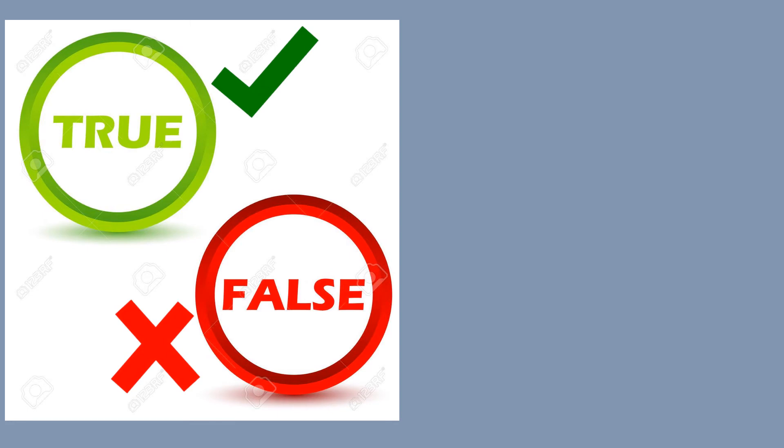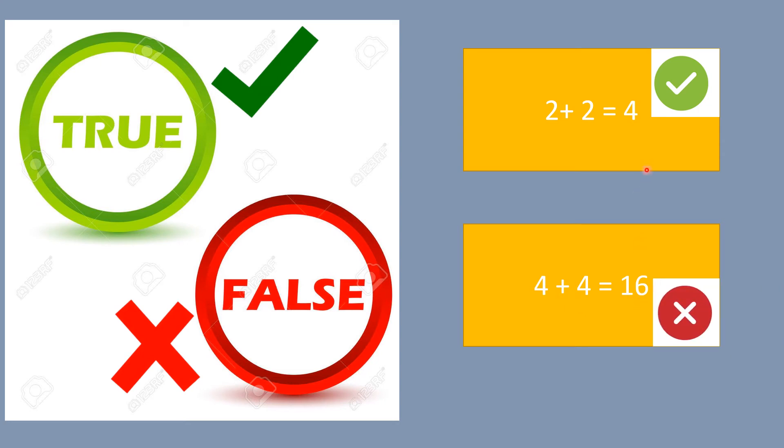True and false. Children, you know true and false very well. True means correct and false means wrong. Now look at this sum. 2 plus 2 is equal to 4. Is it true that 2 plus 2 is equal to 4? Yes, it is true. 4 plus 4 is equal to 16. Is it true that 4 plus 4 is equal to 16? No. So this is a true answer. This is a false answer.